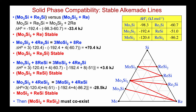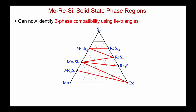And there is our complete set of solid-state compatibilities determined from our thermodynamic data. Now we can identify all of the three-phase sub-triangles within the system — and there they all are. Within the middle of every triangle, three phases coexist — specifically the ones at the vertices of each triangle.